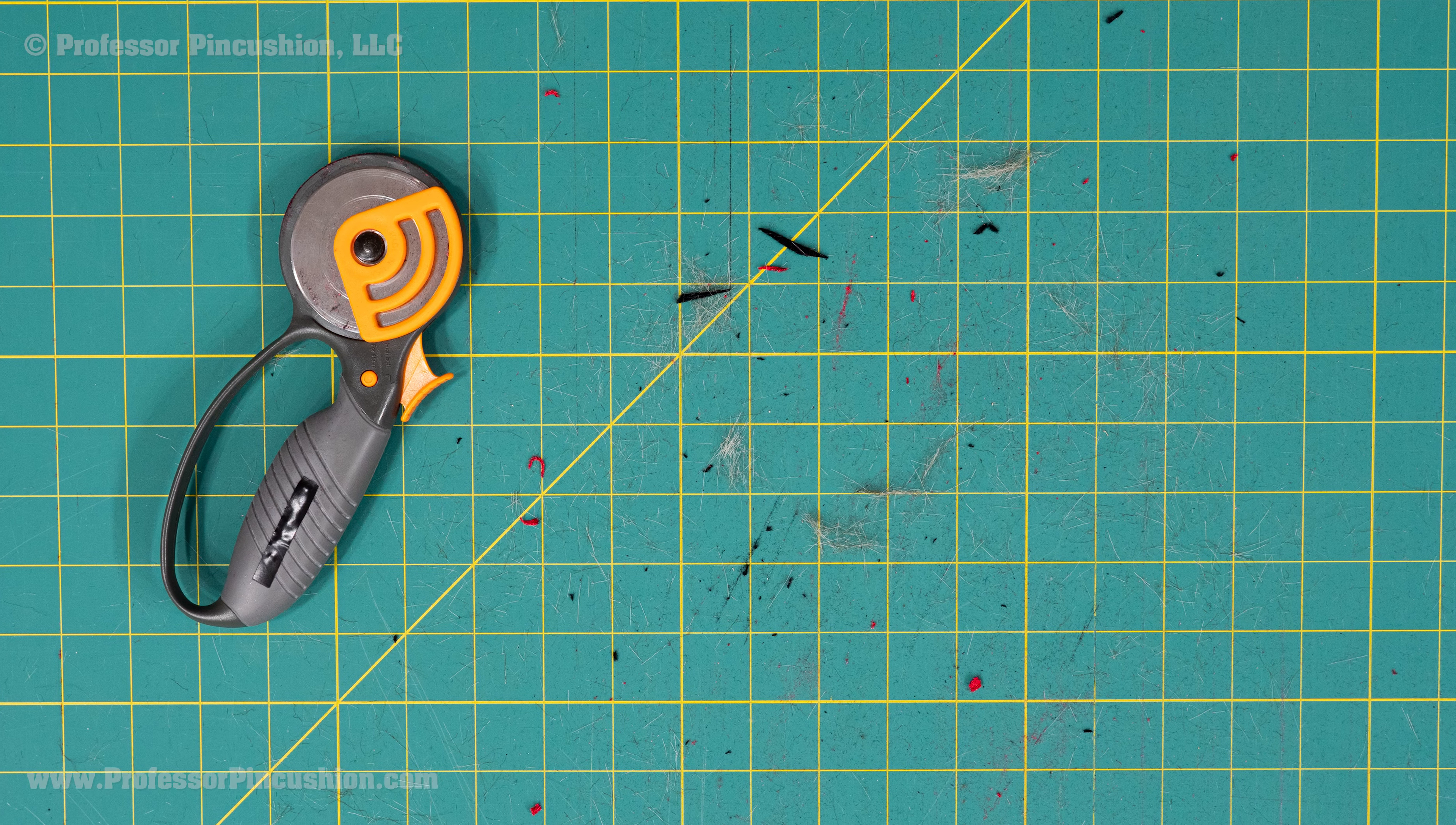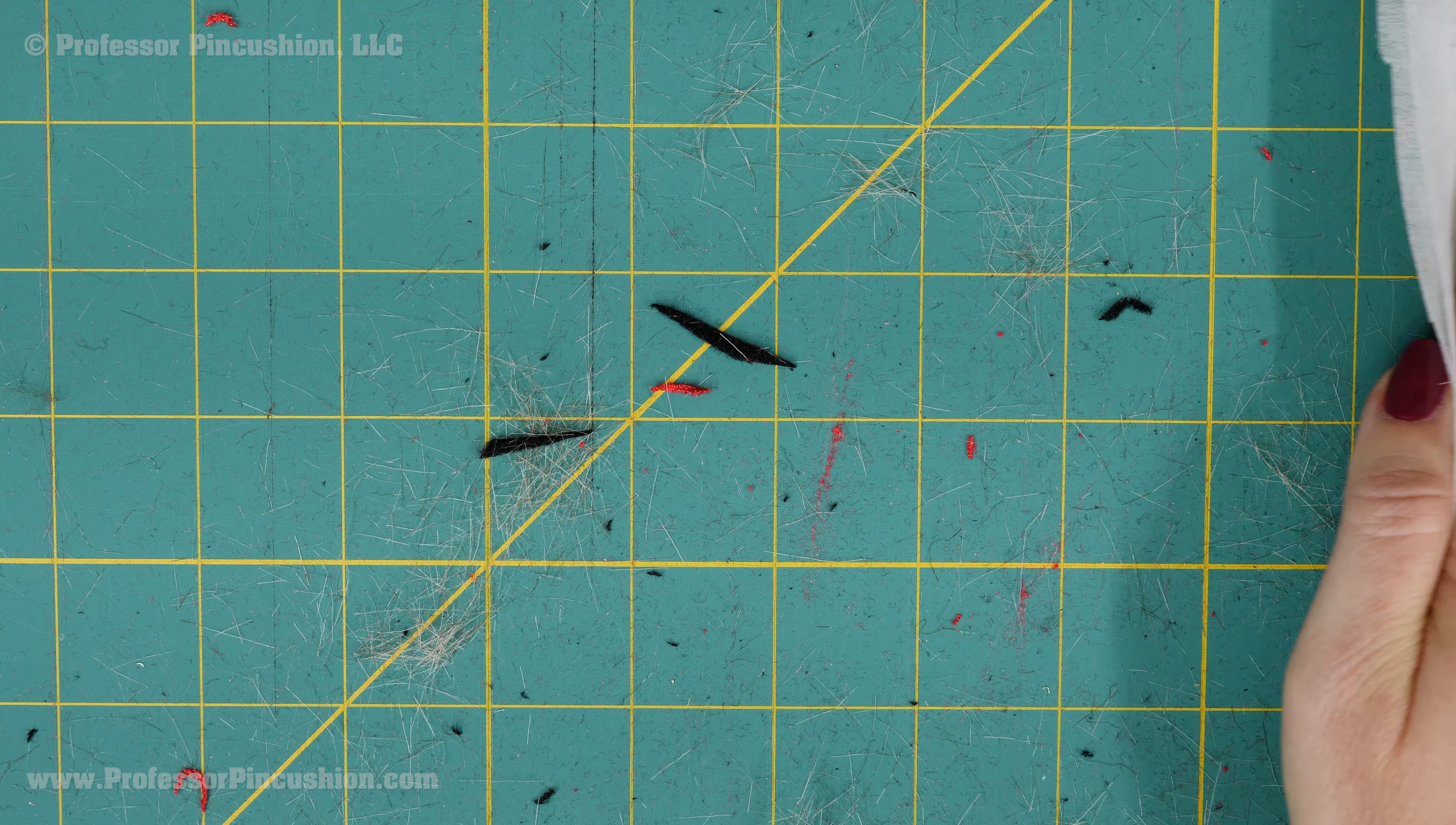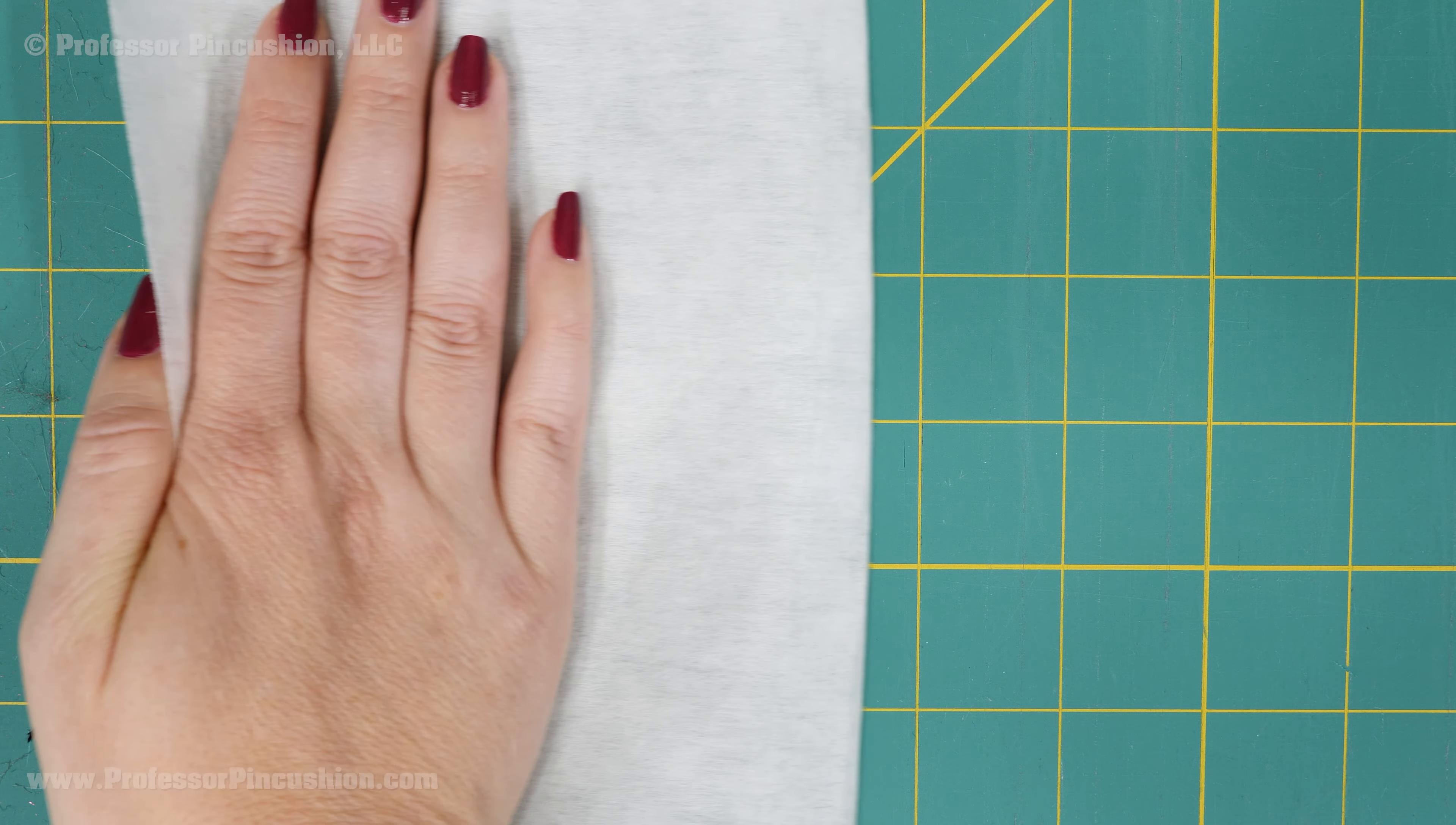Using a rotary cutter and self-healing mat can be a time saver in sewing. But if used a lot, your mat can take a lot of abuse. This video will offer tips to keep your mat in excellent shape.